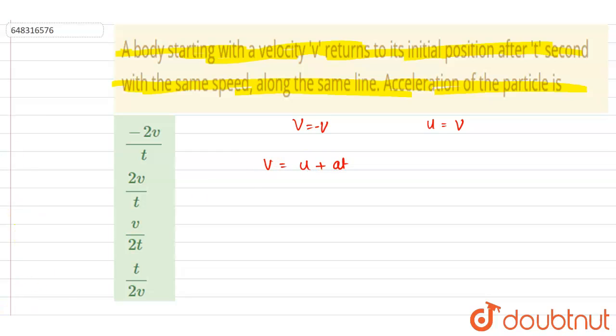So here if you put the value, the final velocity is minus v, initial velocity was v, and acceleration is a times t. So from here you will get the acceleration: it is minus 2v by t.